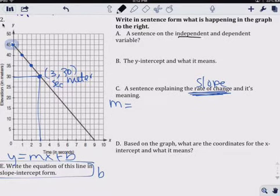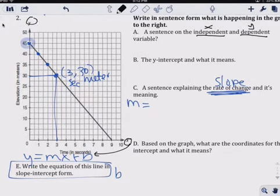All right, a sentence on the independent, that's your x. What the x is, the x is here in this case, times in seconds. And dependent, what your y is, what your y means. Your y is the elevation in meters.